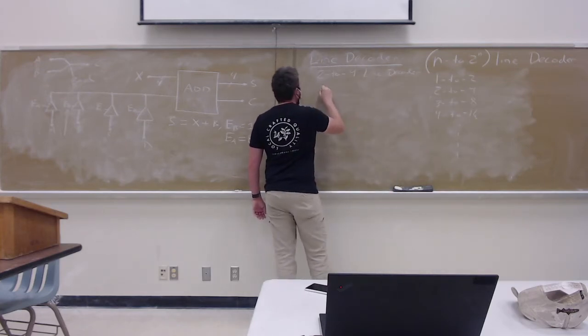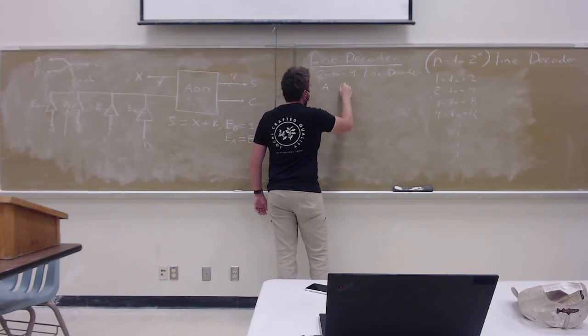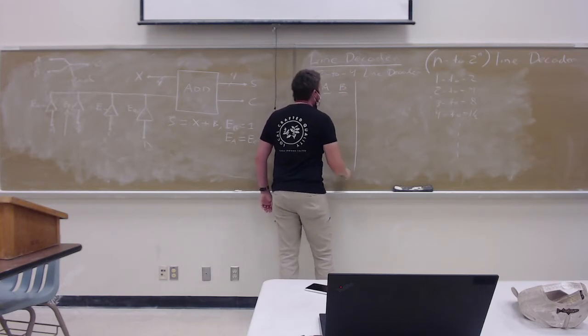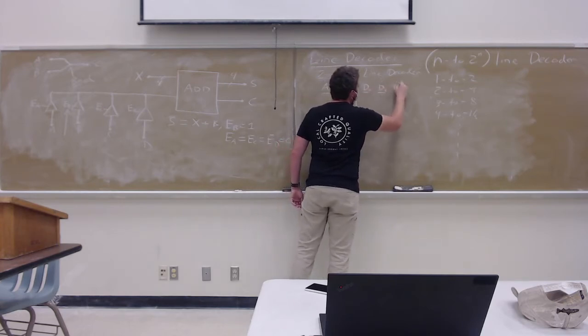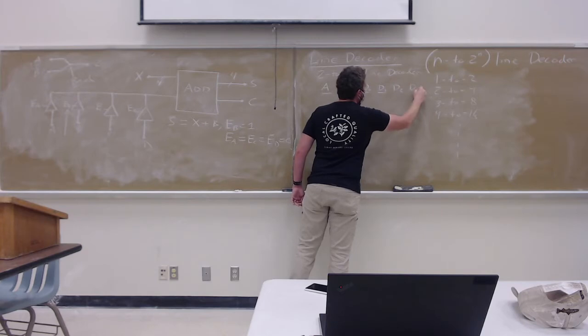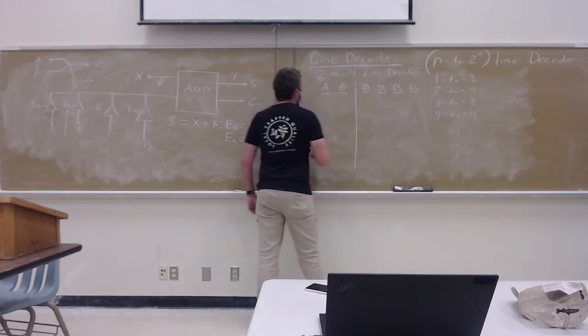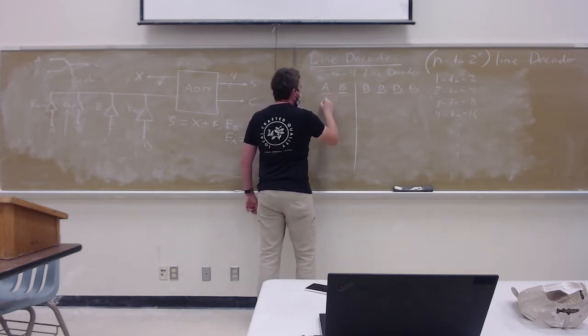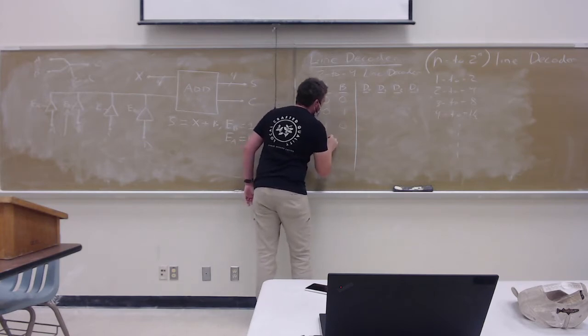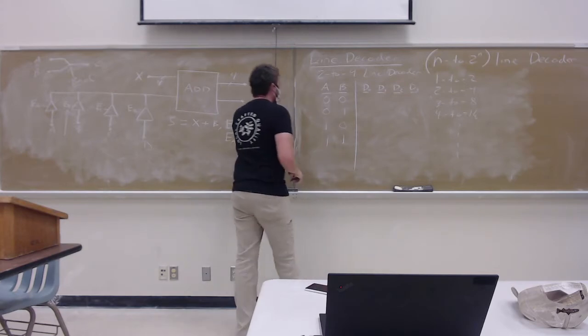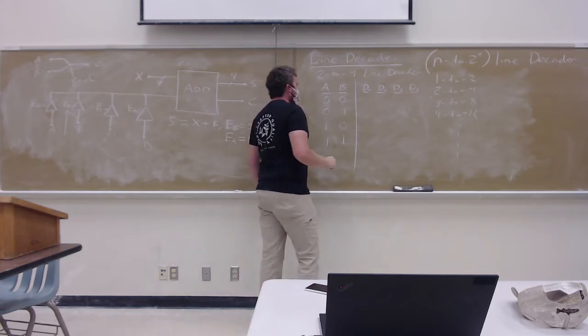So, 2 to 4 line decoder. We'll have inputs which are called A and B. And our outputs we'll have as D0, D1, D2, and D3. We lay out, like always, all the possible inputs for our input side: 0, 0; 0, 1; 1, 0; and 1, 1.